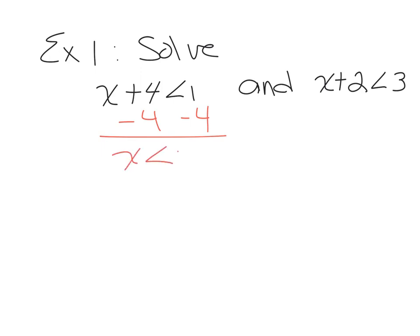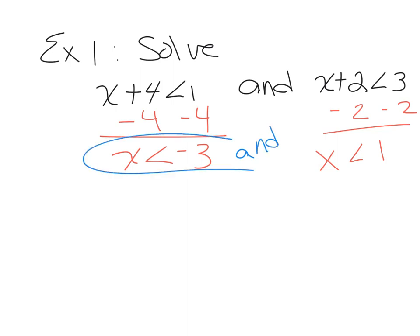Subtracting 4 to isolate x gives x is less than negative 3. We didn't have to flip because we did not multiply or divide by a negative. Then subtracting 2 on the other side gives x is less than 1. These are our two solution statements with AND between them.